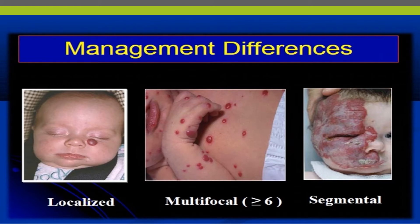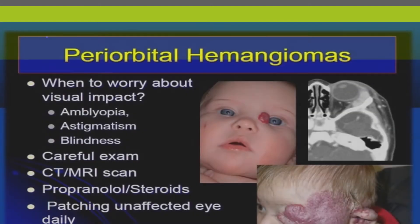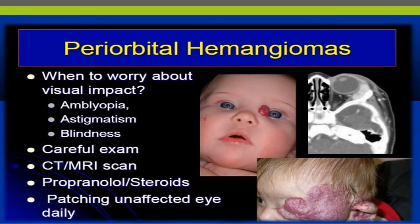Management depends on the location and number of hemangiomas. For preorbital hemangioma, we should worry about visual impact — amblyopia, astigmatism, and blindness. Careful ophthalmological examination and imaging such as CT scan and MRI might be needed.